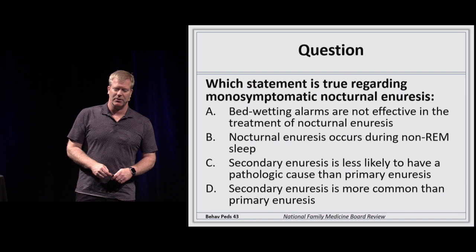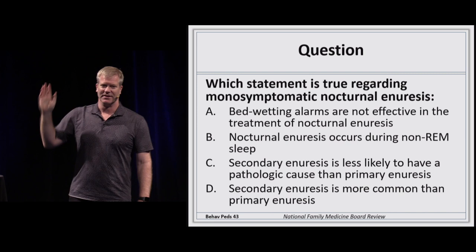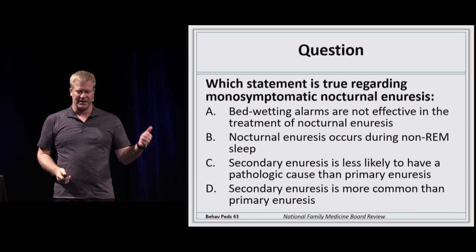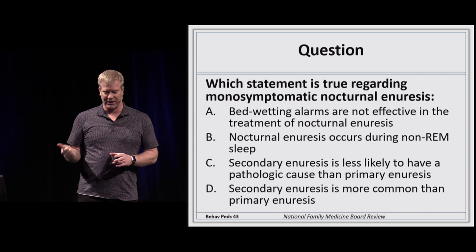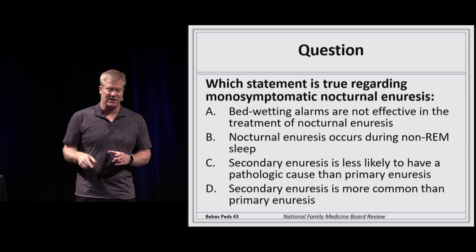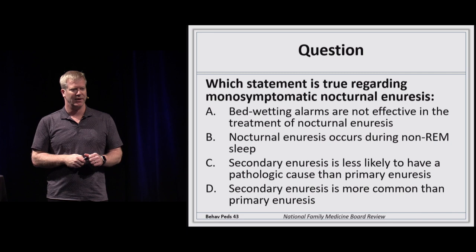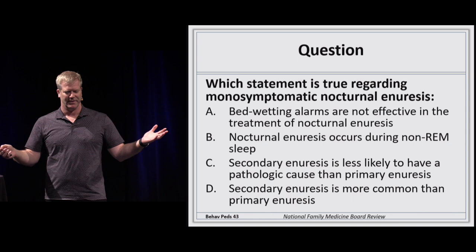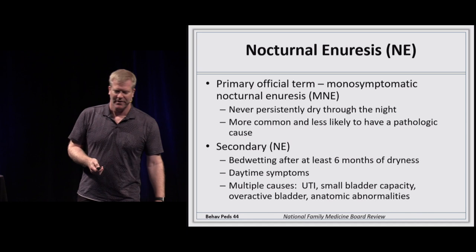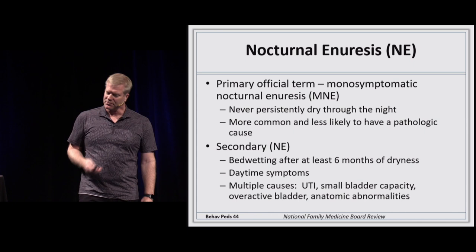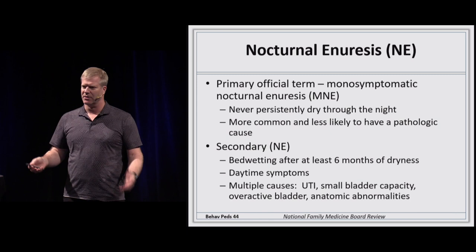Primary monosymptomatic nocturnal enuresis is the official term for bedwetting. Children greater than age 5 regularly having nighttime incontinence is considered normal. Spontaneous resolution occurs at about 15% per year, so by age 15 only 1–2% still wet the bed. It is more prominent in males, there is a positive family history component, and it occurs during non-REM sleep.